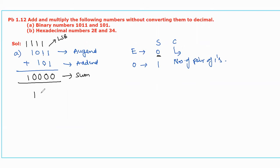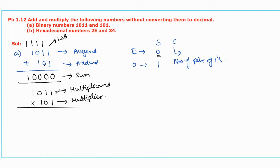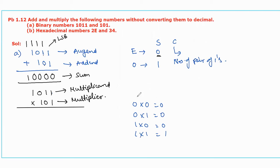Similarly we can perform the multiplication of two binary numbers: 1011 multiplied by 101. The first number is named the multiplicand and the second number is the multiplier. To perform binary multiplication, when we multiply the multiplier with the multiplicand the result will be either 0 or 1 only. The binary multiplication truth table is: 0×0=0, 0×1=0, 1×0=0, 1×1=1. The product will be either 0 or 1.